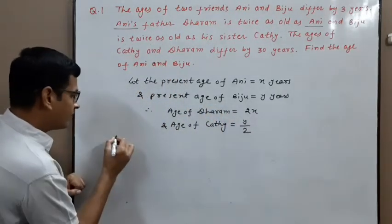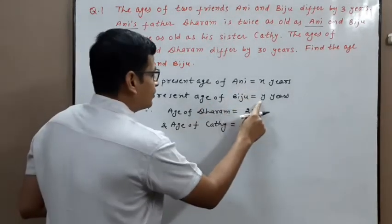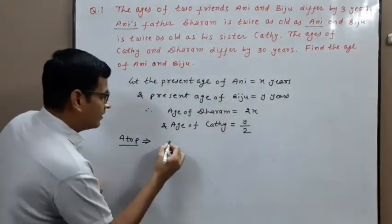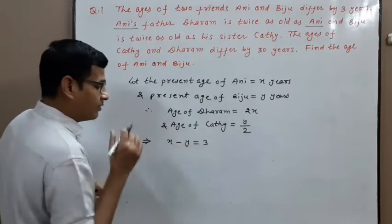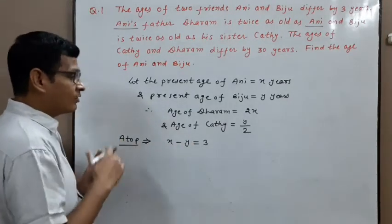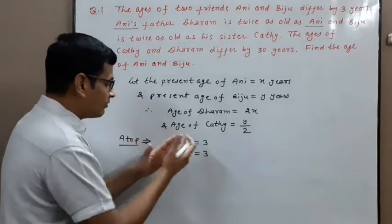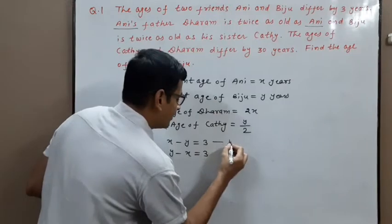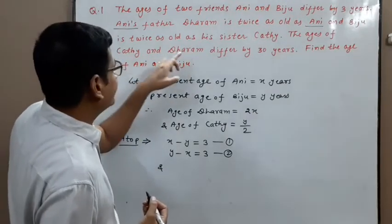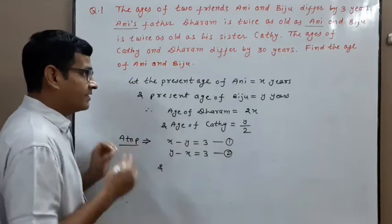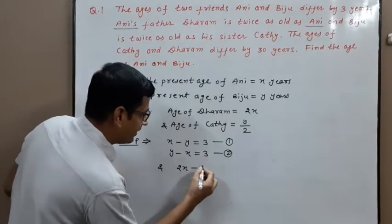Now according to the problem, the ages of Ani and Biju differ by 3 years, which means X minus Y equals 3 — if age of Ani is more than Biju. But if age of Biju is more than Ani, then Y minus X equals 3. So there are two equations, equation 1 and equation 2. The third equation comes from: the ages of Cathy and Dharam differ by 30 years.